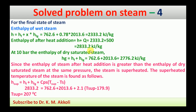We compare this enthalpy after heat addition with the dry saturated steam enthalpy at 10 bar. The enthalpy of dry saturated steam: hg = hf + hfg = 762.6 + 2013.6 = 2776.2 kJ/kg. Since the enthalpy after heat addition (2833.2 kJ/kg) is greater than hg (2776.2 kJ/kg), the steam is in the superheated condition.